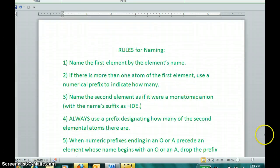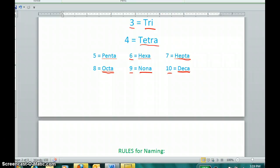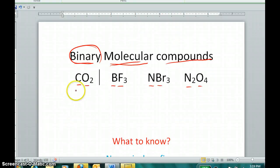Also, there are five simple rules you're going to follow. And I'll use these examples to follow these rules. The first rule is to name the first element by that element's name. So if we scroll up to these examples, this element is carbon. So I'm going to start this name off simply as carbon something.